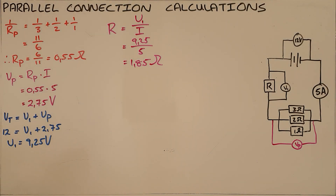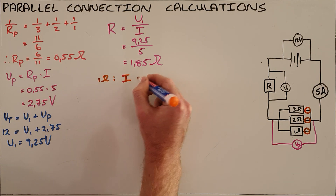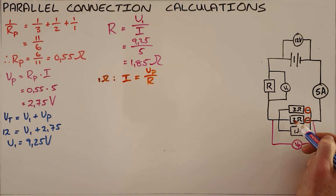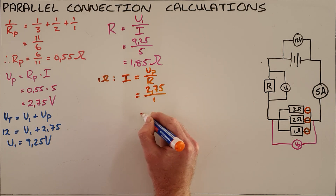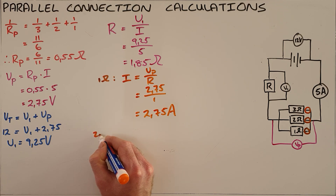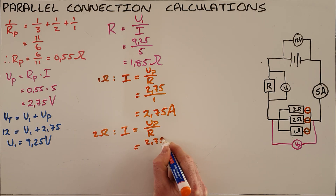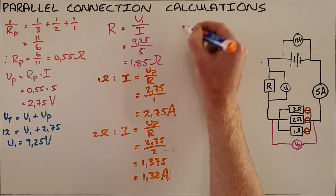Finally, we could also be asked to calculate the current passing through each part of this parallel set. We start by calculating the current through the 1 ohm resistor: current equals voltage divided by resistance, and since voltage in parallel is constant at 2.75 volts, that's 2.75 divided by 1, giving 2.75 amps. For the 2 ohm resistor, the same calculation gives 2.75 divided by 2, which rounds to 1.38 amps.